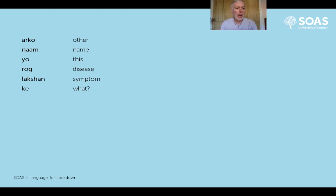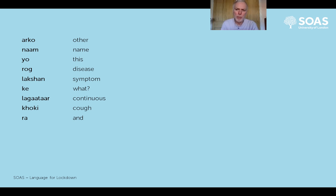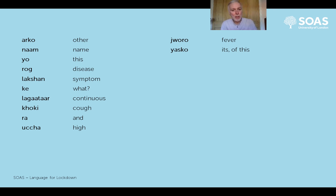'Ke' is another questioning word, again beginning with 'ka', meaning 'what?'. 'Lagatar' is an adjective meaning 'continuous'. 'Koki' means a cough. 'Ra' is one of two words meaning 'and', usually used in a list. 'Ucha' is an adjective meaning 'high'. 'Juaro' is a noun meaning 'fever'. 'Esco' - so we have 'desco' meaning 'of that' and 'esco' meaning 'of this', belonging to it - 'its'.